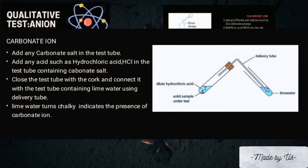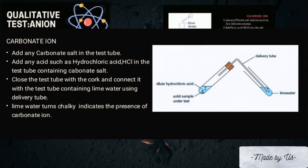For carbonate ion, add any carbonate salt into a test tube. Then, add any acid such as hydrochloric acid into the test tube containing the carbonate salt. Close the test tube with a cork and connect it with a test tube containing lime water using a delivery tube. Lime water turning chalky indicates the presence of carbonate ion.